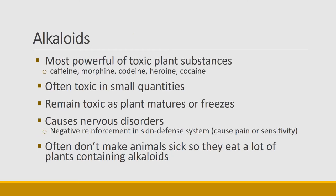We're going to start with alkaloids because they're some of the most powerful toxic plant substances we deal with. These will sound familiar — things like caffeine, morphine, codeine, heroin, cocaine. Those are all alkaloids. They're water-soluble, effective in fairly small quantities, and they have characteristics that make them dangerous — such as remaining toxic even after the plant matures or freezes.